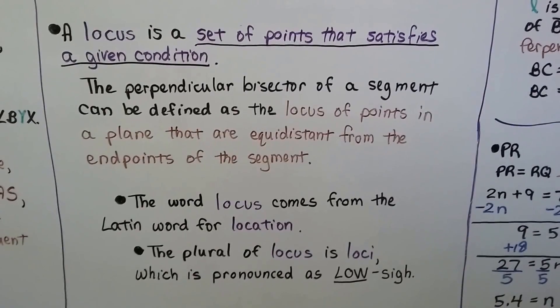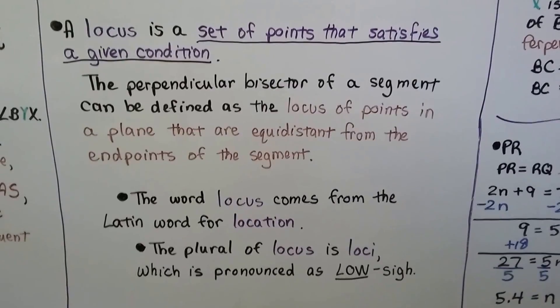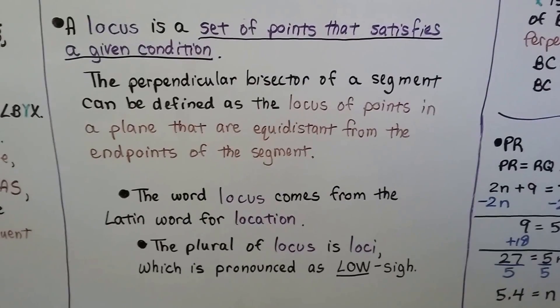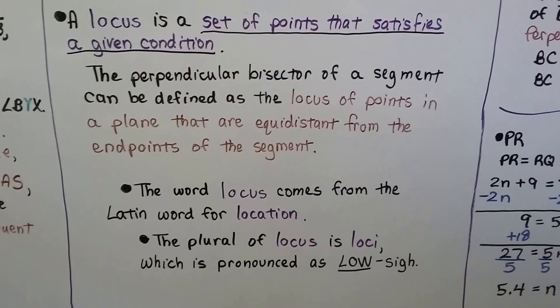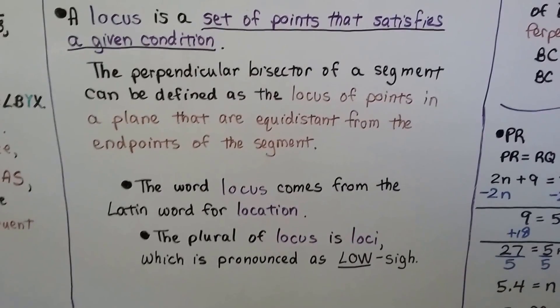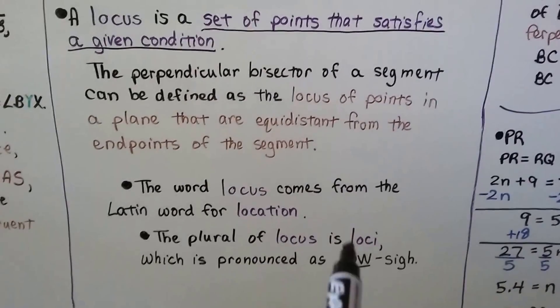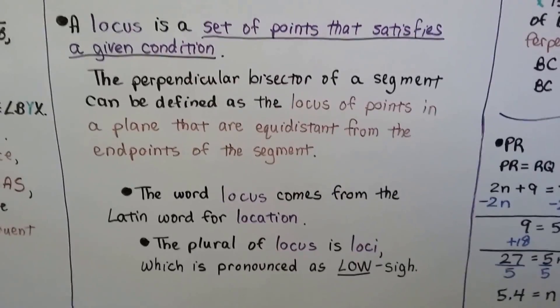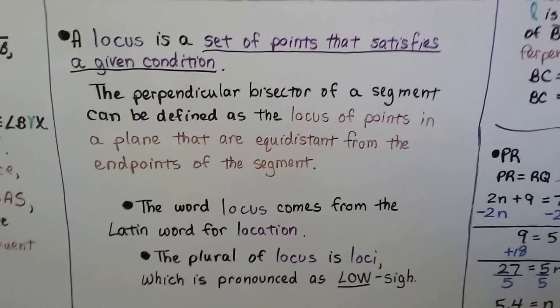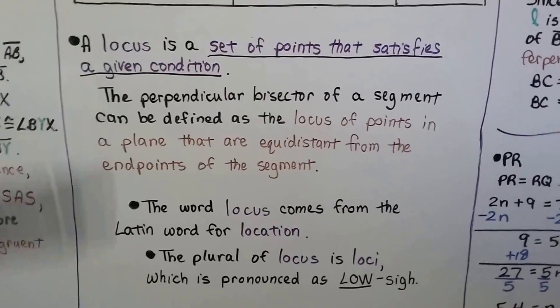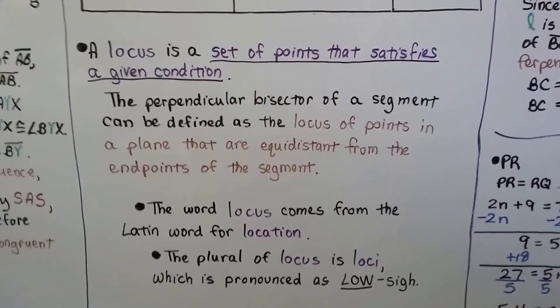The word locus comes from the Latin word for location, and the plural of locus is loci. It's just a set of points that satisfies a given condition.